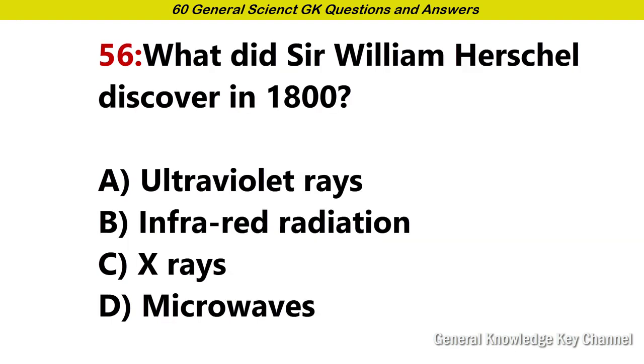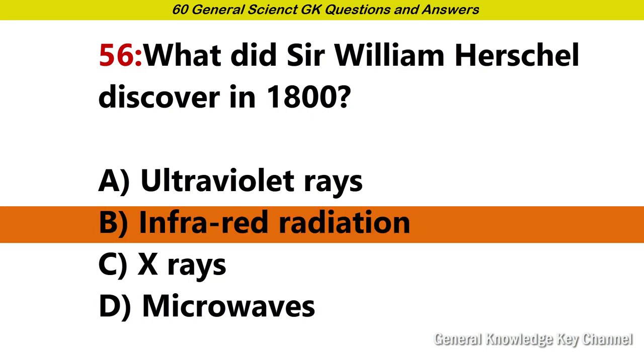What did Sir William Herschel discover in 1800? Answer B. Infrared radiation.